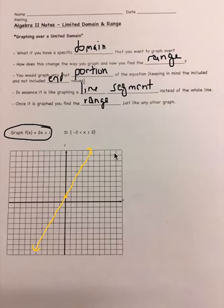So this is our line, our overall line of the graph f of x equals 2x plus 1. And so now we are given the domain. The domain here is negative 3 is less than x is less than or equal to 2.